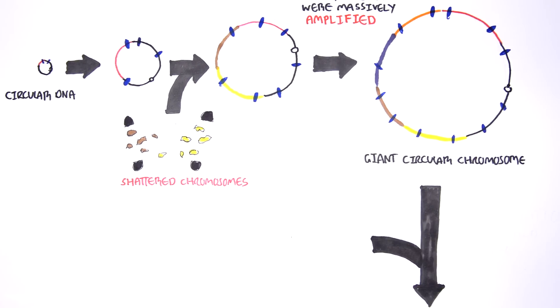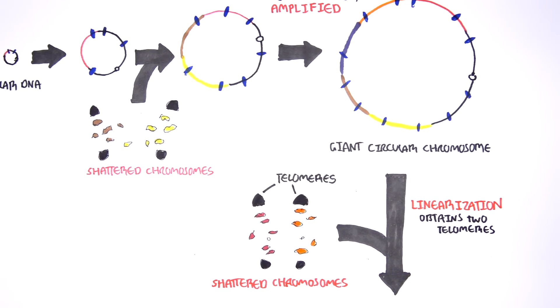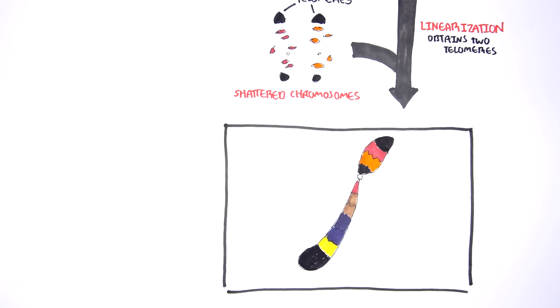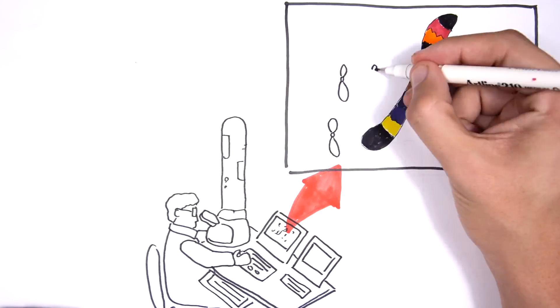At some point in the process, the circular chromosome stops growing, captures two telomeres from other chromosomes, and once more, becomes a linear chromosome. This is the giant that we can perceive through the microscope in fully formed tumors.